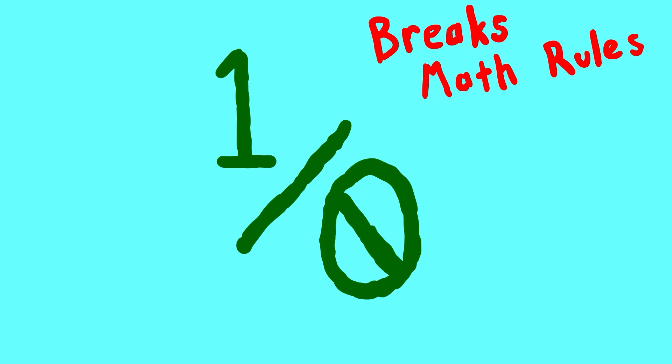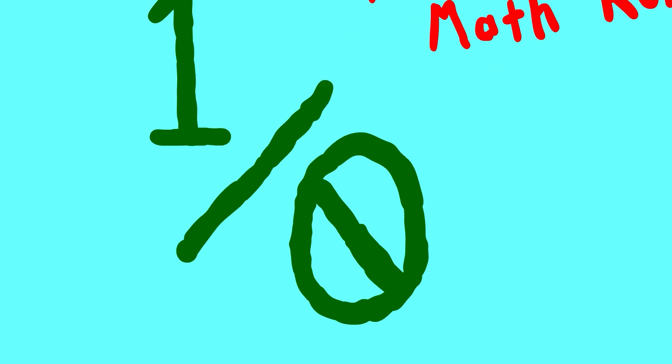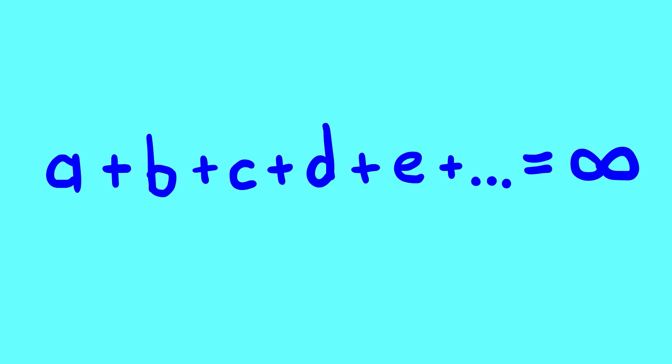Infinity is incredibly big, so large that we don't even consider it a number. To treat it like a number would be like dividing by zero. We'd be breaking the rules of math. But what if we broke the rules just a little bit and created an infinite series that eventually would add up to infinity? We'd get some pretty strange results.